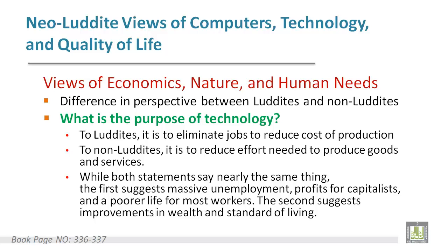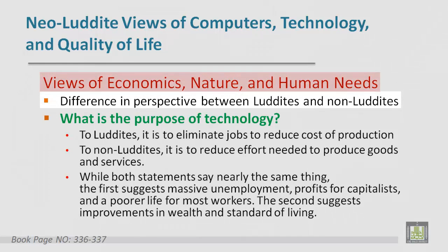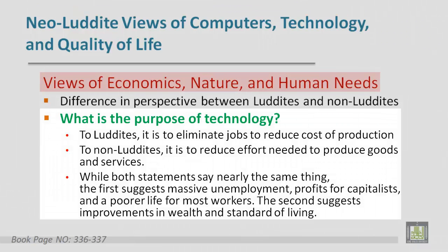The starting point and main difference between them is the purpose of technology. What is the purpose of technology? To Luddites, it is to eliminate jobs and reduce the cost of production — this is the negative view. On the other hand, to non-Luddites, technology is to reduce the effort needed to produce goods and services, and this is the positive side.